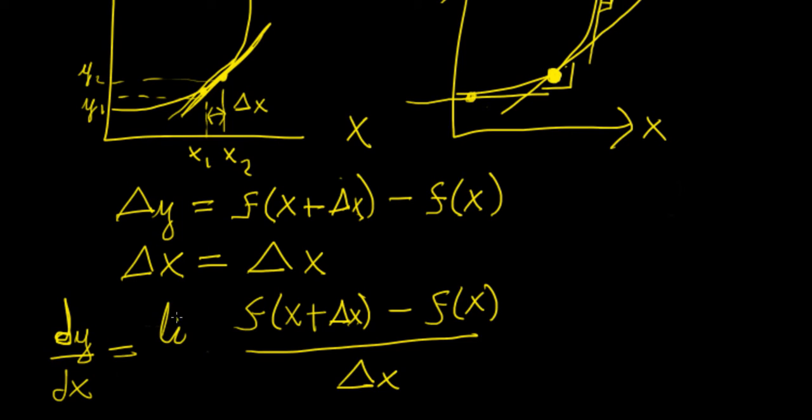And this is going to be equal to the limit of this function as delta x goes to zero. So this is essentially what we have here. And this is what we call a derivative.